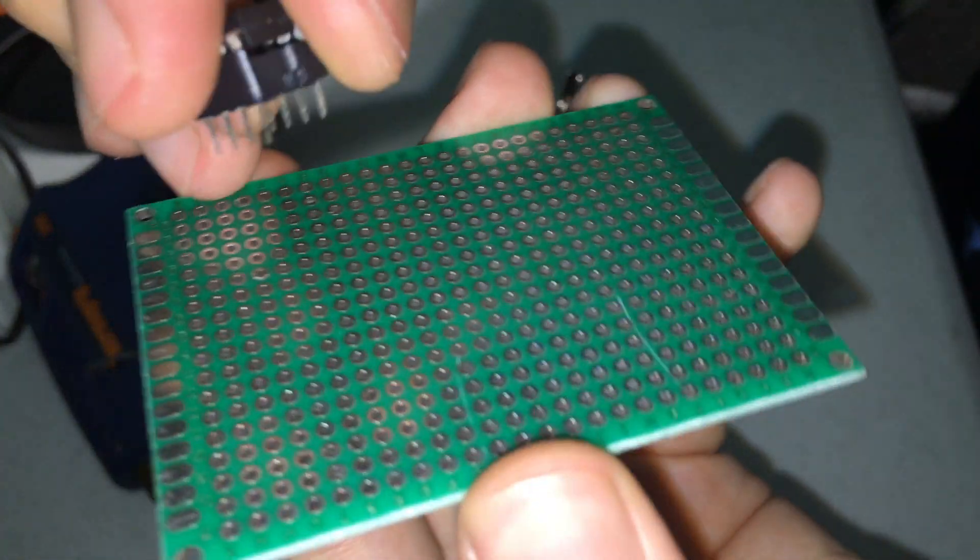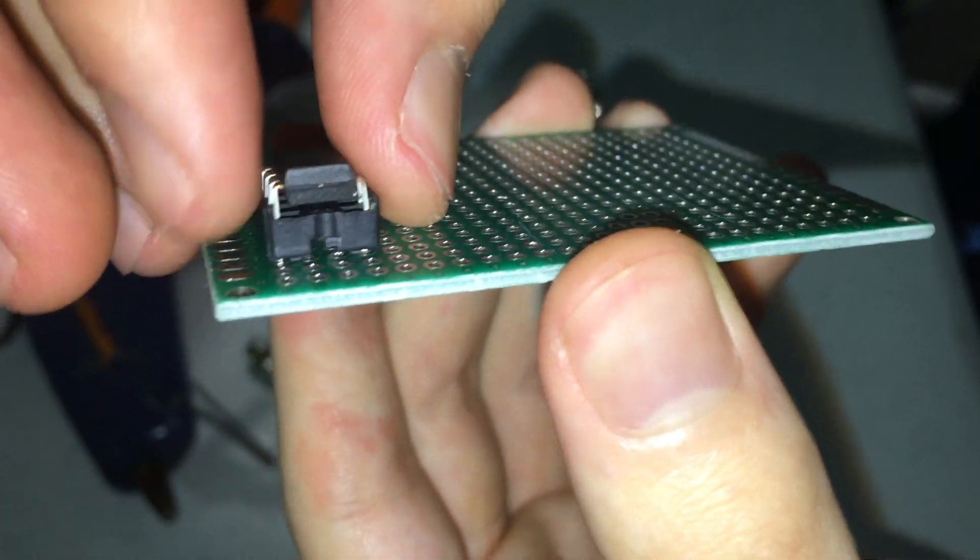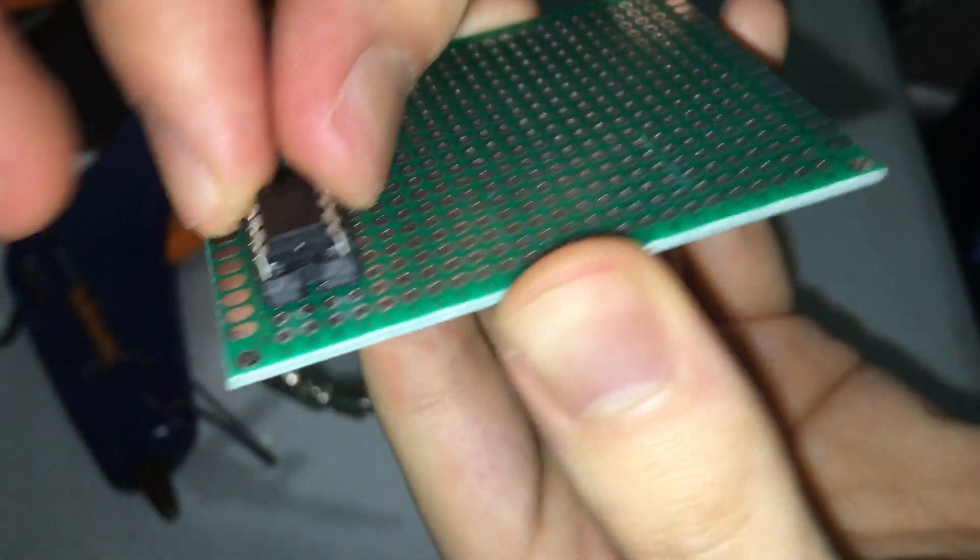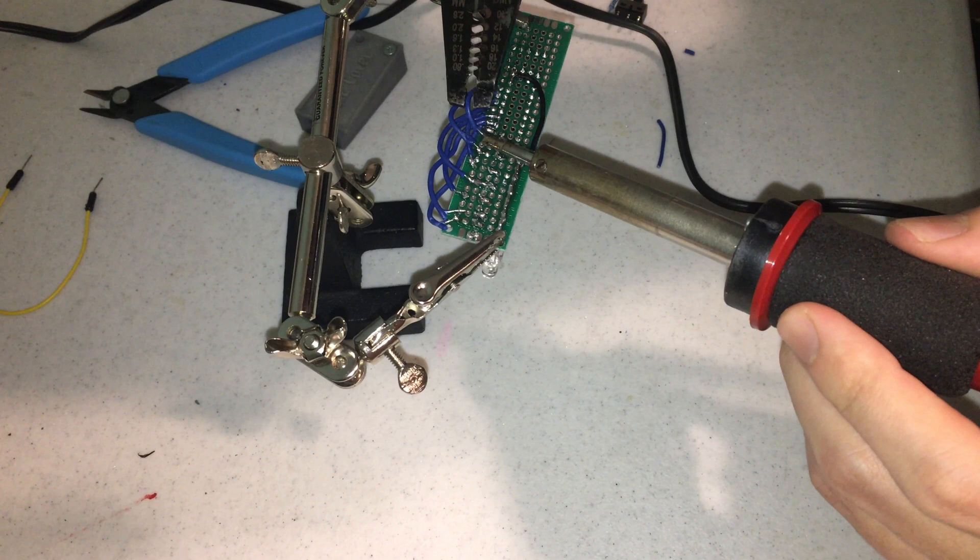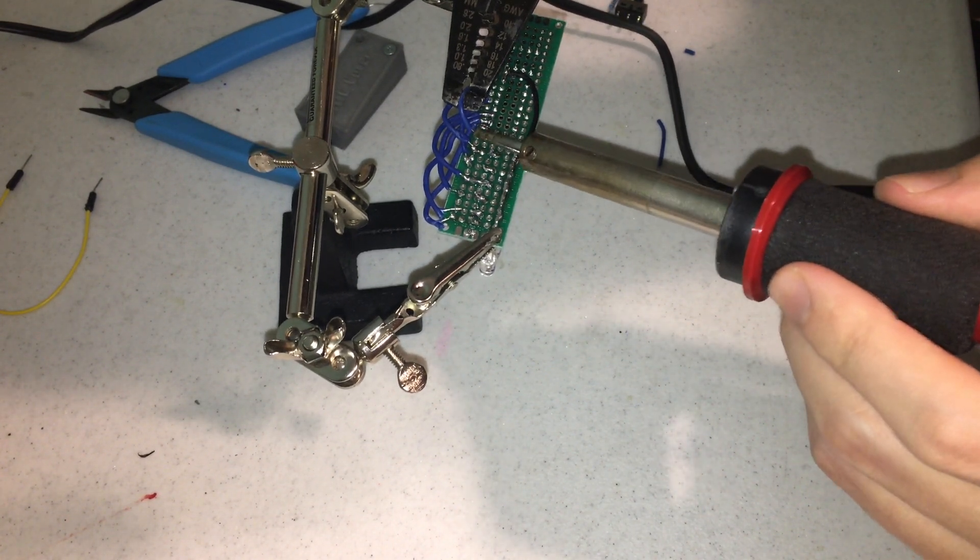A pair of helping hand clips will save a lot of time when soldering. I recommend getting a pair to hold your wires and PCB board for any project.